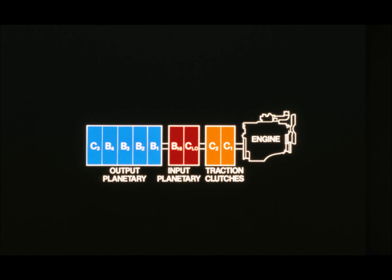This block diagram shows the major components of the power shift drivetrain. The drivetrain consists of two traction clutches, C1 and C2, and two compound planetary packs, input and output. The input planetary pack is controlled by a brake and a clutch, B-high and C-low. The output planetary pack is controlled by four brakes, B1 through B4, and one clutch, C3. These clutches and brakes are engaged or disengaged in various combinations to produce 15 forward speeds and four reverse speeds.